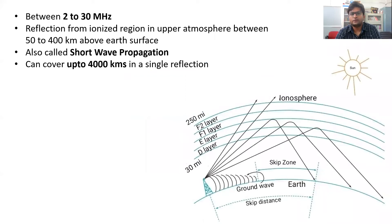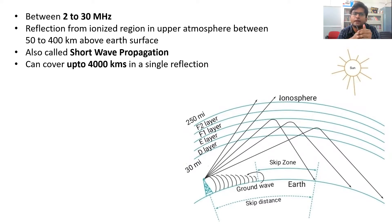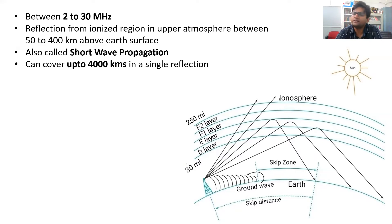As we already saw, ground wave propagation works for the frequency range up to 2 megahertz and space wave propagation works beyond 30 megahertz. Sky wave propagation fills this gap and is basically used for the frequency range of 2 to 30 megahertz.